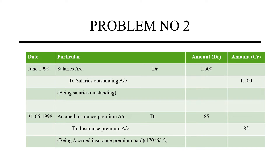The first one is: salaries for the month of June 1998, Rs. 1500 unpaid. The same entry will come — salaries account debit to salaries outstanding account. That is, debit for increase in expenses and credit for increase in liabilities. Outstanding liability increases, so that is liability increase in credit. And salaries represent an increase in expenses, so that is debit.